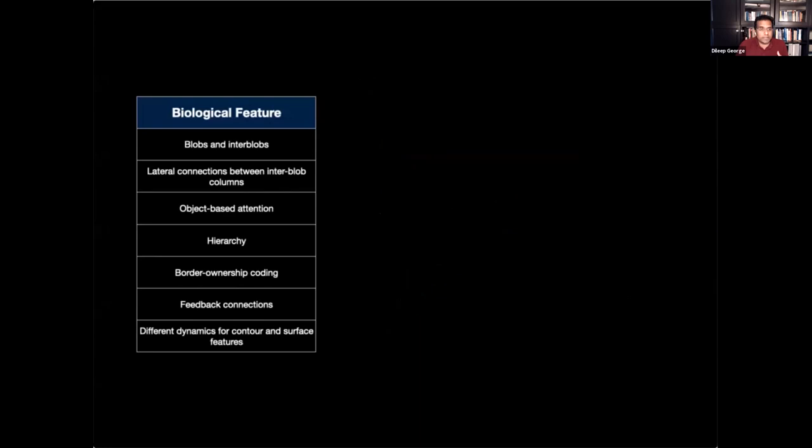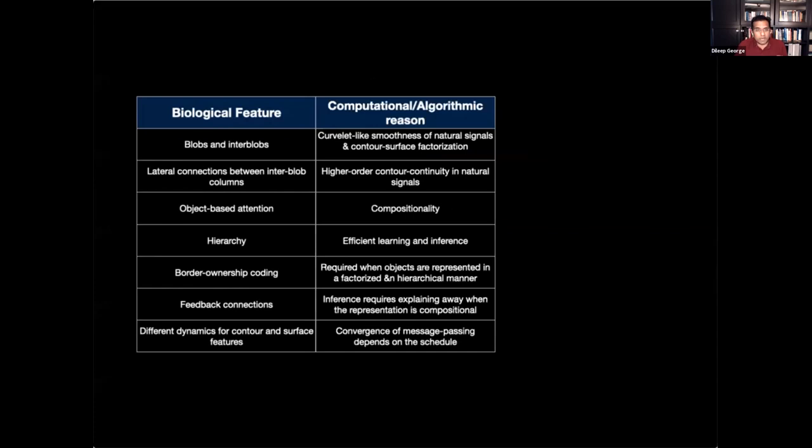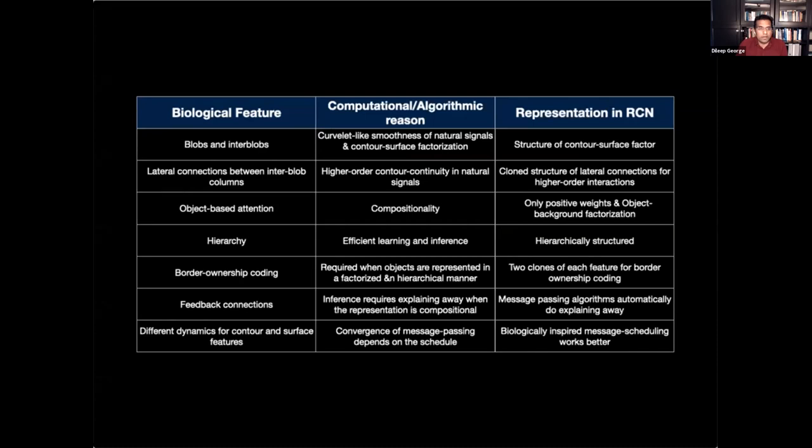And in fact, we have lots of details on what were the computational features, how it is connected to representation in RC, and what is the computational algorithmic reason for that. For example, I'm just taking one row from here, the top row. Blobs and interblobs is an organizational feature that we see in the visual cortex. And it is connected to the algorithmic principle of separately representing contours and surfaces. And that is suitable for representing natural signals. Just to give you a flavor of how we think about these ideas.